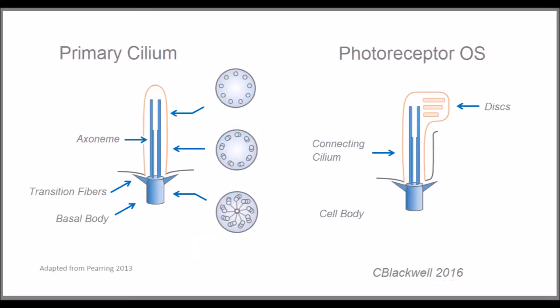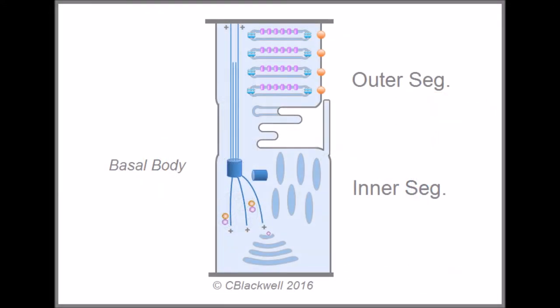In the photoreceptor, in this outer compartment, the outer segment, we also add the discs. More specifically, in the photoreceptor, the base of the axoneme, the basal body, is located in the top of the inner segment. The axoneme structure extends through the connecting cilium into the outer segment.